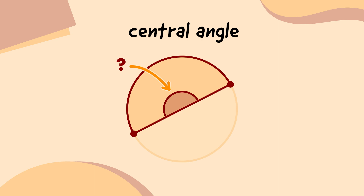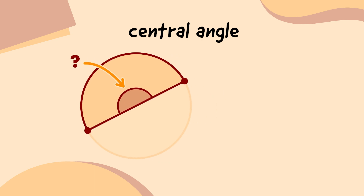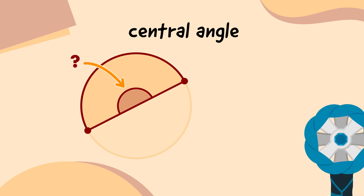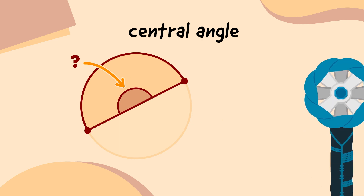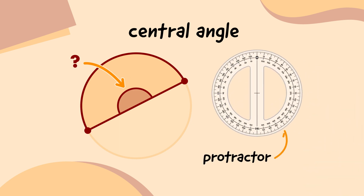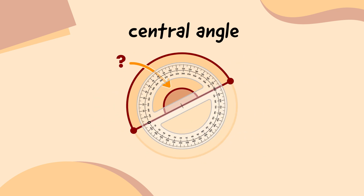But how do we measure an angle? Well, fortunately, the top of my measuring staff has a nifty tool called a protractor, which we use to measure angles. To measure an angle with a protractor, we just place the zero degrees point on one of the angle's straight edges, and see where the other side ends up.